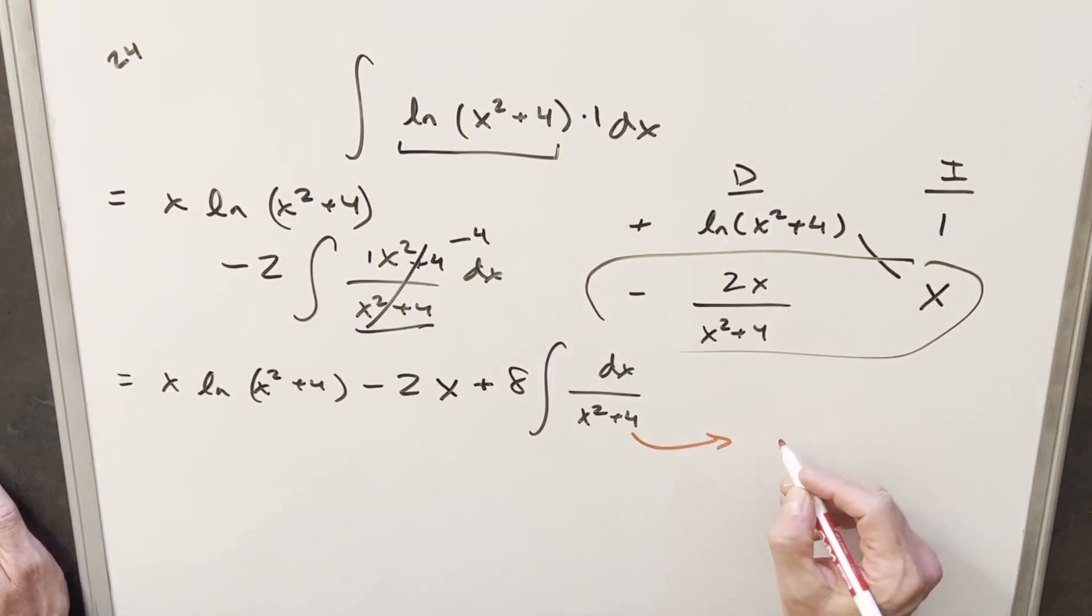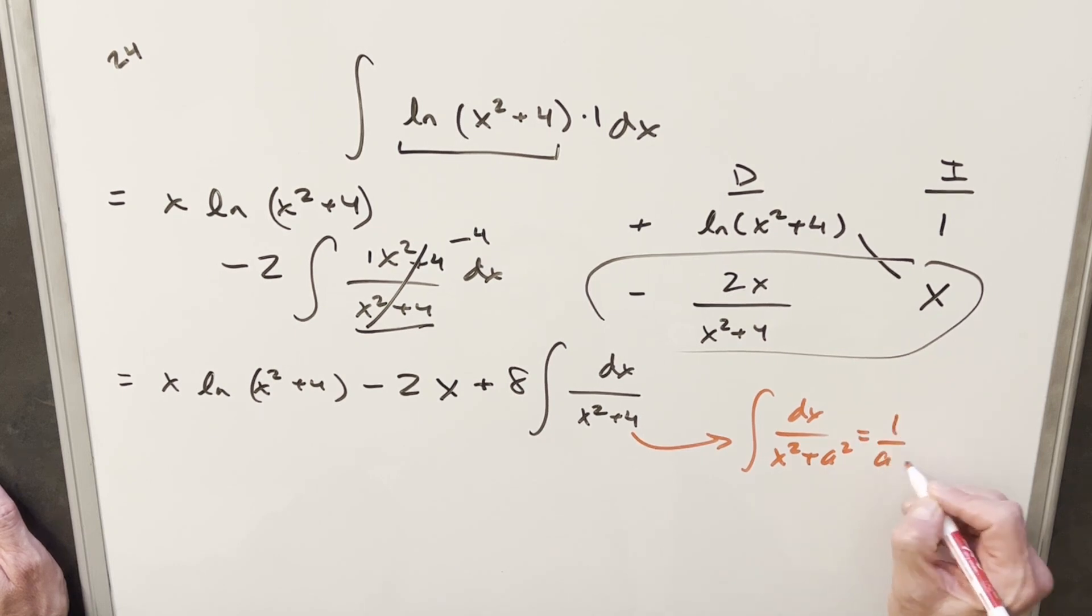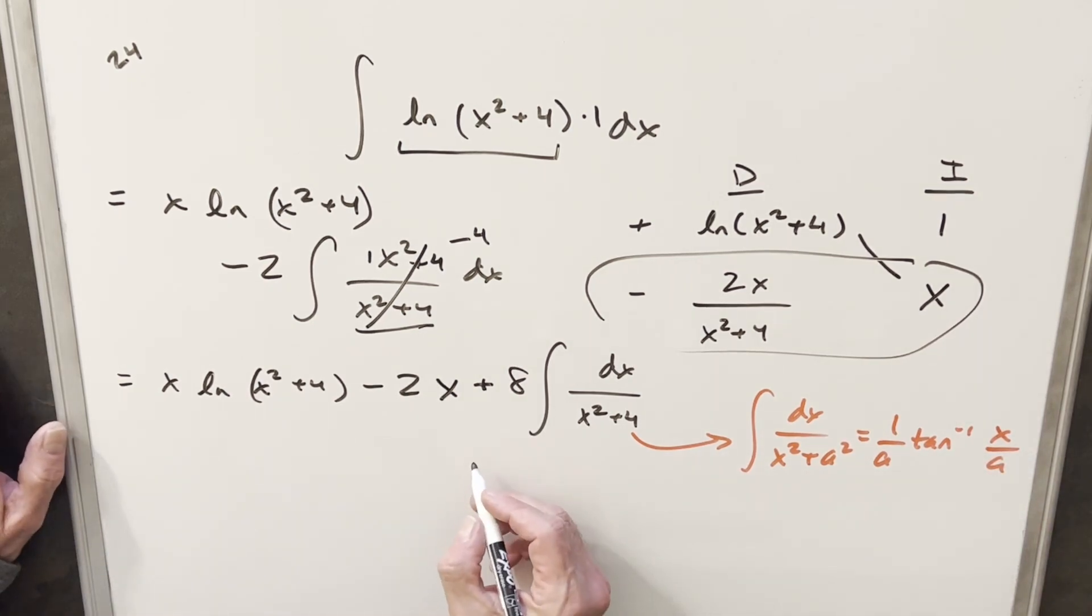But now this is in the form for arctan, so let me show that really quick. If we have an integral like dx over x squared plus a squared, this is going to be 1 over a arctan x over a, and so we can use this formula on this to finish it off.